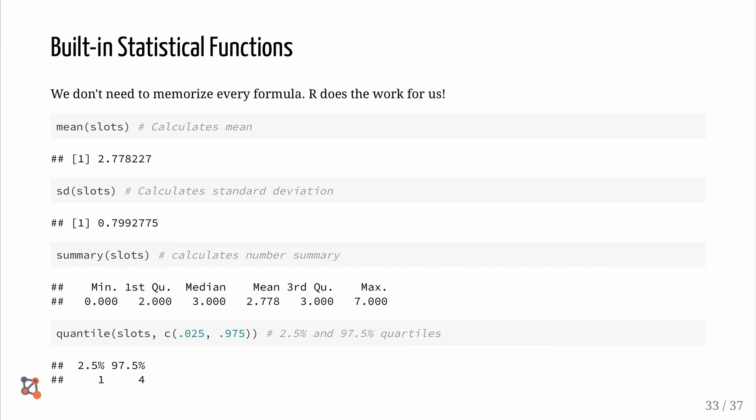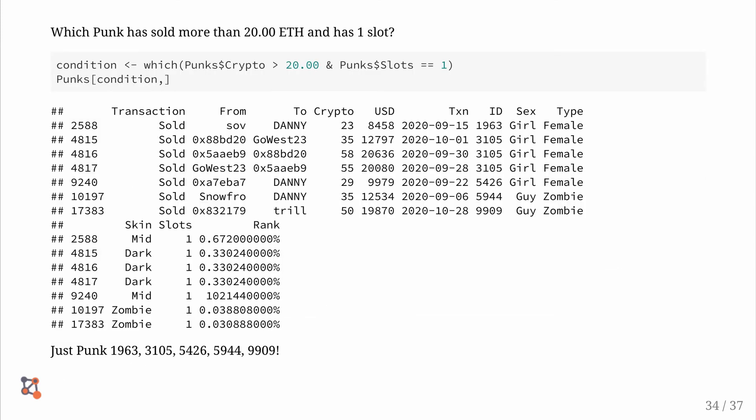We just need to type mean and input our variable. So the mean of slots, the standard deviation of slots, the summary, and the quantile. We can also create conditions. Which punk has sold for more than 20 Ethereum and has one slot? The following code answers that question. Only five punks satisfy these conditions.